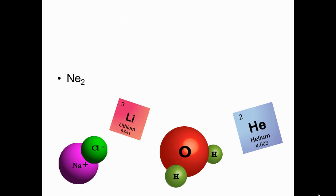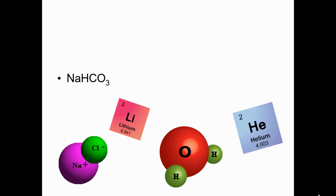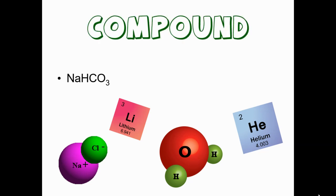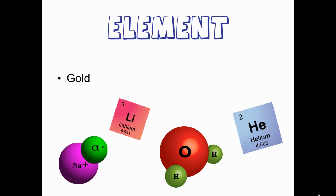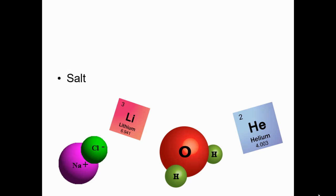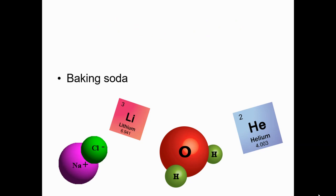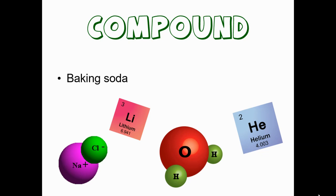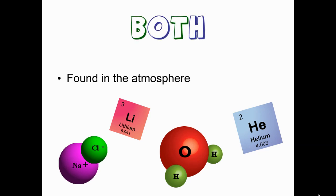Li is a representation of an element. Ne2 is a representation of an element. NaHCO3 is a representation of a compound. Gold is an example of an element. Salt is an example of a compound. Baking soda is an example of a compound. Things found in the atmosphere are both elements and compounds.